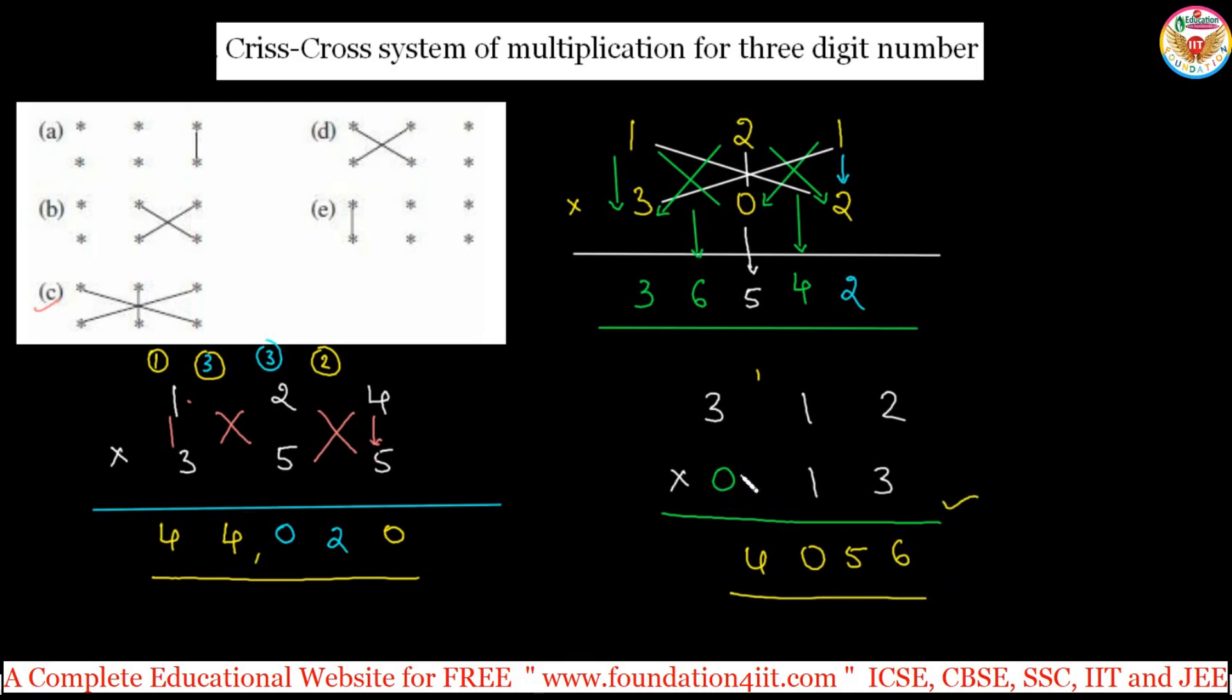Even if the one number is less, in case of 3 by 2 order—3 numbers by 2 numbers—this method, you can apply. This completely criss-cross system of multiplication for 3 digit numbers.